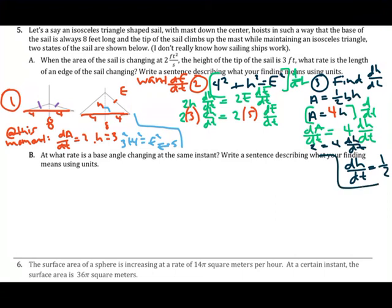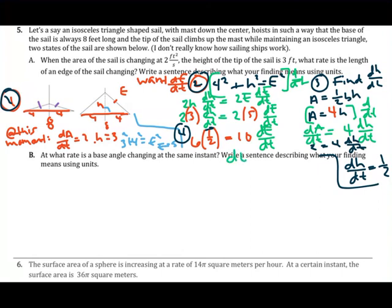Now returning to the Pythagorean equation and plugging in dH/dt equals 1/2, along with H equals 3 and E equals 5: 6 times 1/2 equals 10 times dE/dt. Solving gives dE/dt equals 3/10 feet per second.